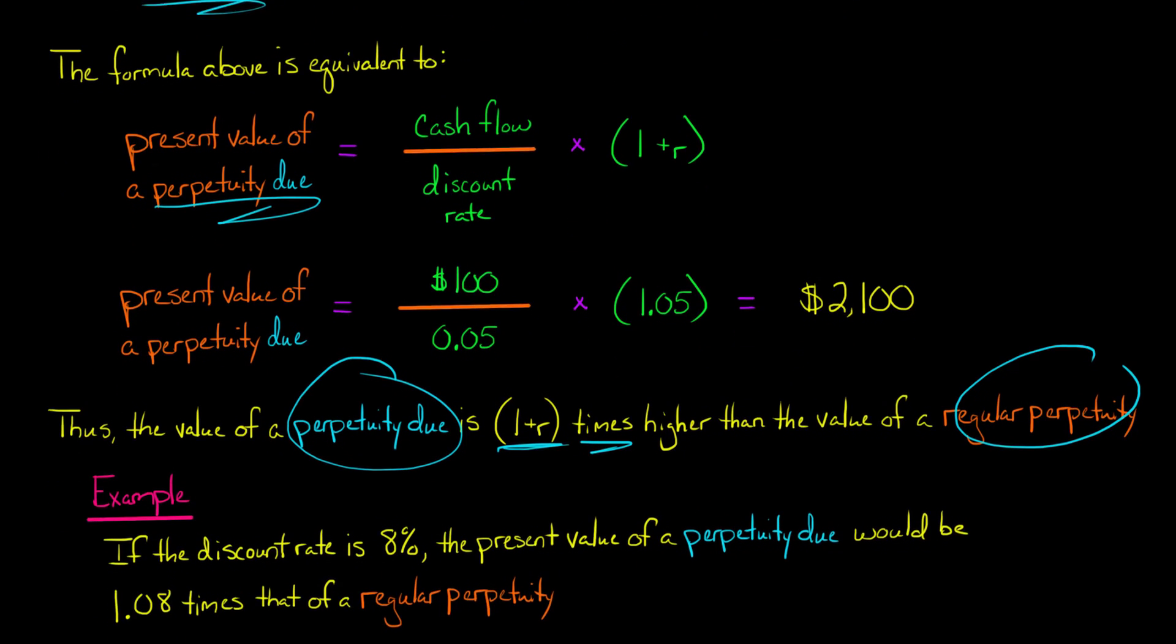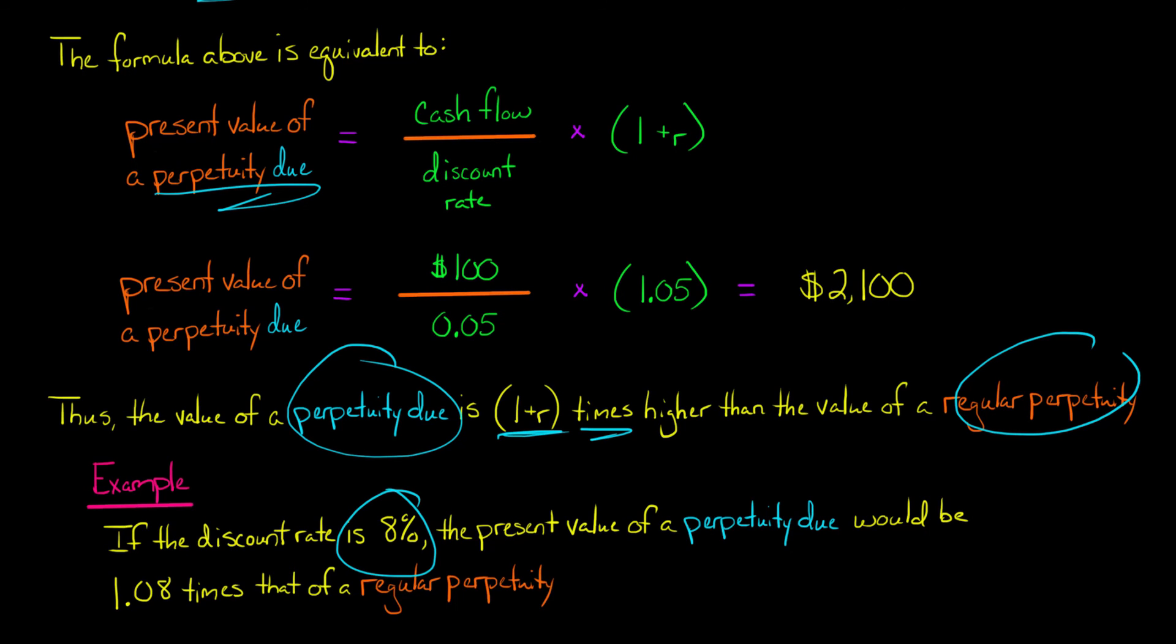For example, if you had a discount rate of 8%, then the present value of a perpetuity due would be 1.08 times higher than that of a regular perpetuity.